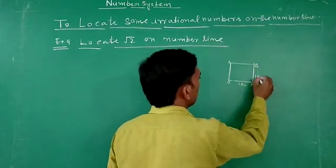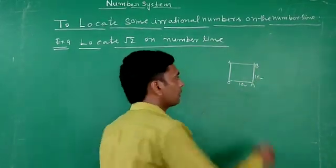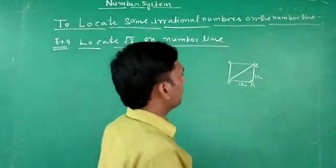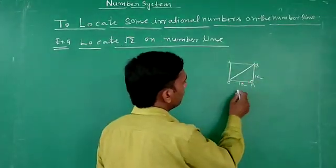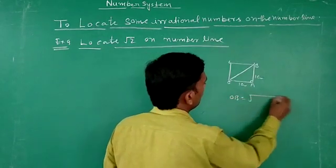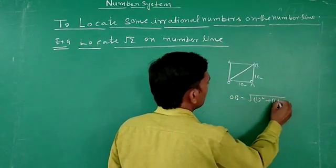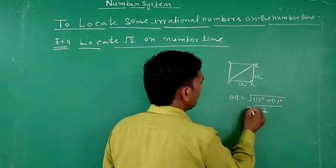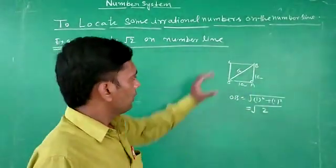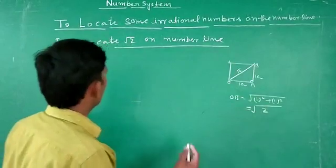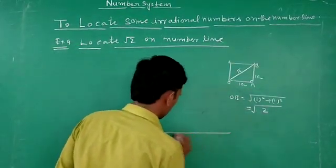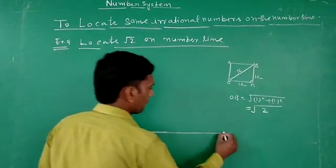Suppose this side is one centimeter. This gives us a right angle triangle. If you have a right angle triangle, using the sides — one centimeter and one centimeter — and this is a square root construction. Here is the number line.